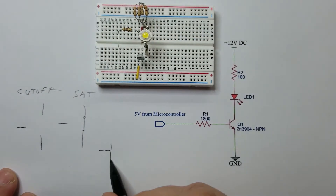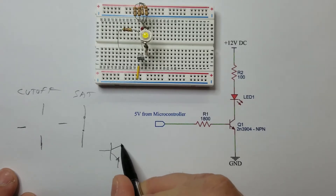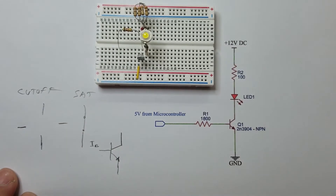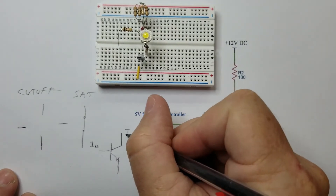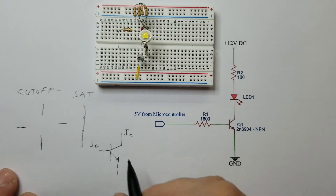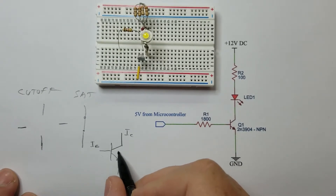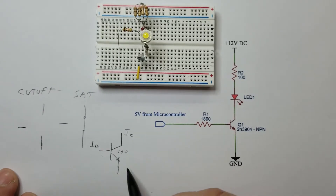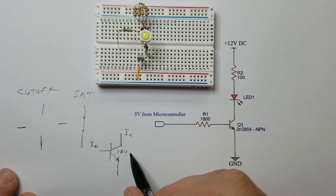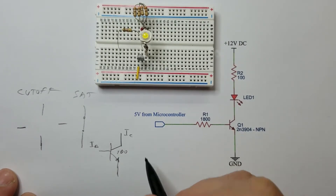This is an NPN transistor. You have your base current and your collector current, and the transistor has a gain of, say, 100. That is what makes a transistor an amplifier — the fact that it has what is known as a gain, also known as beta or HFE.